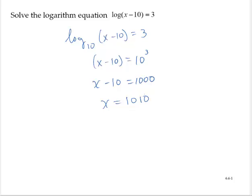We can easily check this on our calculator. Notice that if we substitute 1,010, we would have log(1,010 - 10) = log(1,000), which is certainly 3, because 10³ = 1,000.